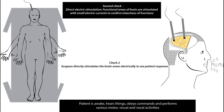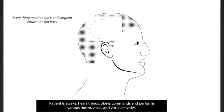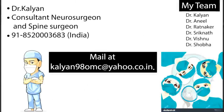At the slightest abnormality in either the first or second check, the surgeon becomes more careful and alters the surgical strategy to achieve safe maximal excision. Finally, the maximum amount of tumor is removed with minimal neurological deficits. This is called safe maximal excision, which is the ideal goal of surgery for the maximum number of brain tumors. For more information regarding awake craniotomy, kindly contact us on the phone number provided.